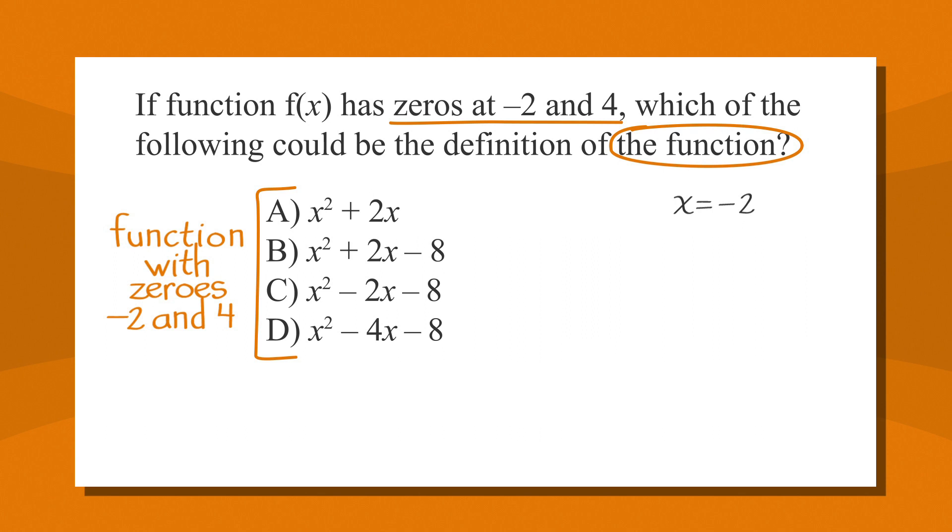Answer choice B becomes negative 2 squared plus 2 times negative 2 minus 8. That simplifies to 4 minus 4 minus 8, which is not equal to 0. So cross off answer choice B. Answer choice C becomes negative 2 squared minus 2 times negative 2 minus 8. That simplifies to 4 plus 4 minus 8, which equals 0. So we'll have to come back and check answer choice C with our other zero as well. Finally, answer choice D becomes negative 2 squared minus 4 times negative 2 minus 8. That works out to 4 plus 8 minus 8, which is not equal to 0. So cross off answer choice D.